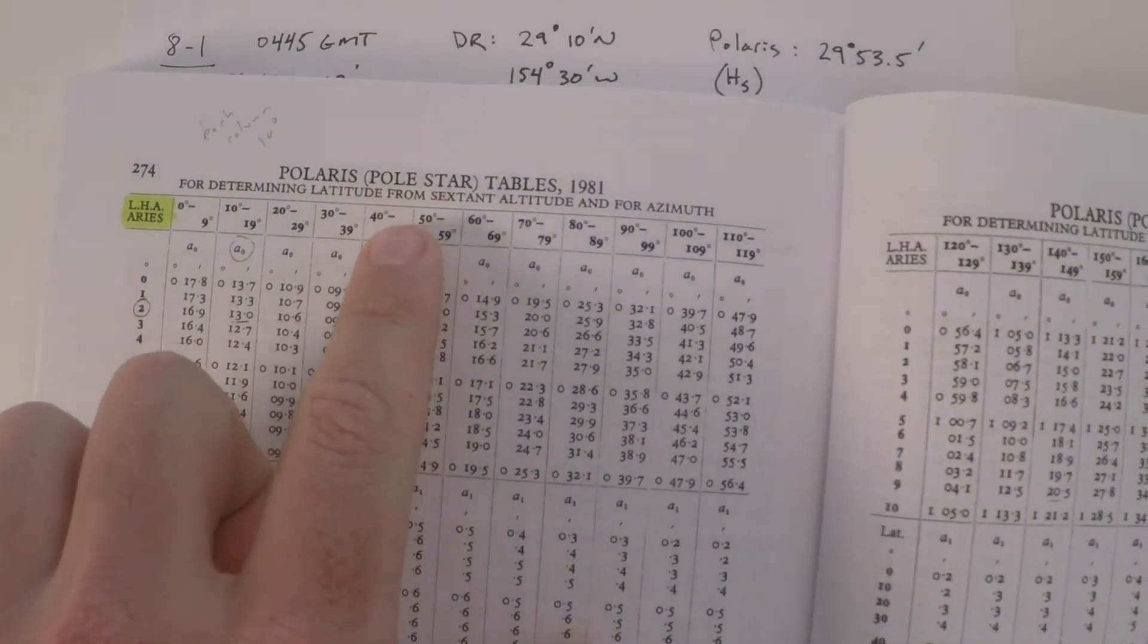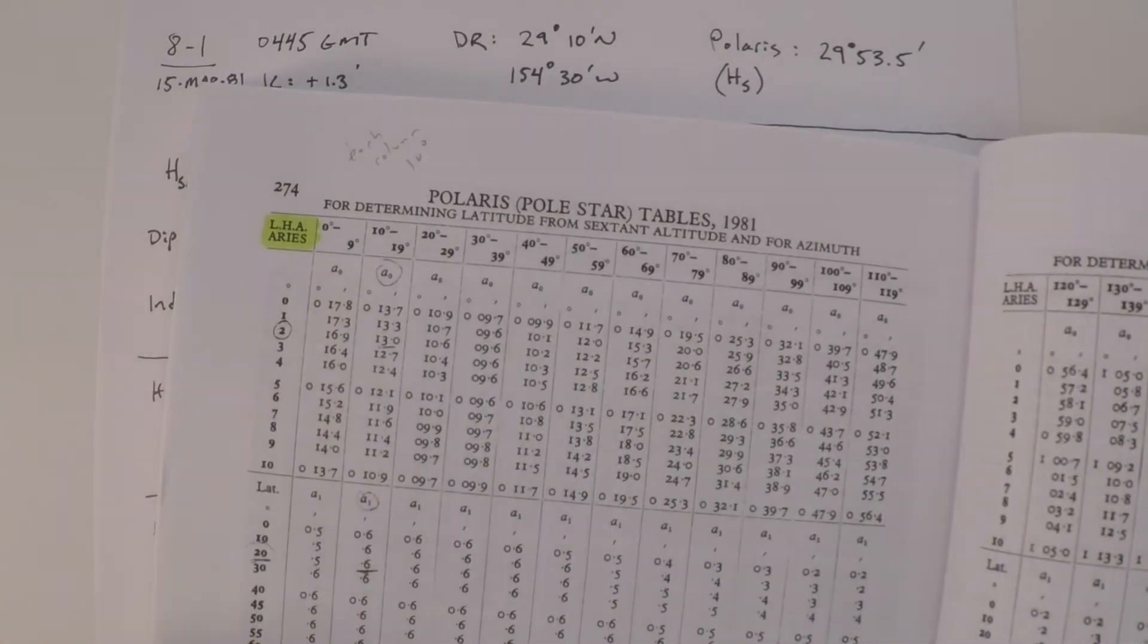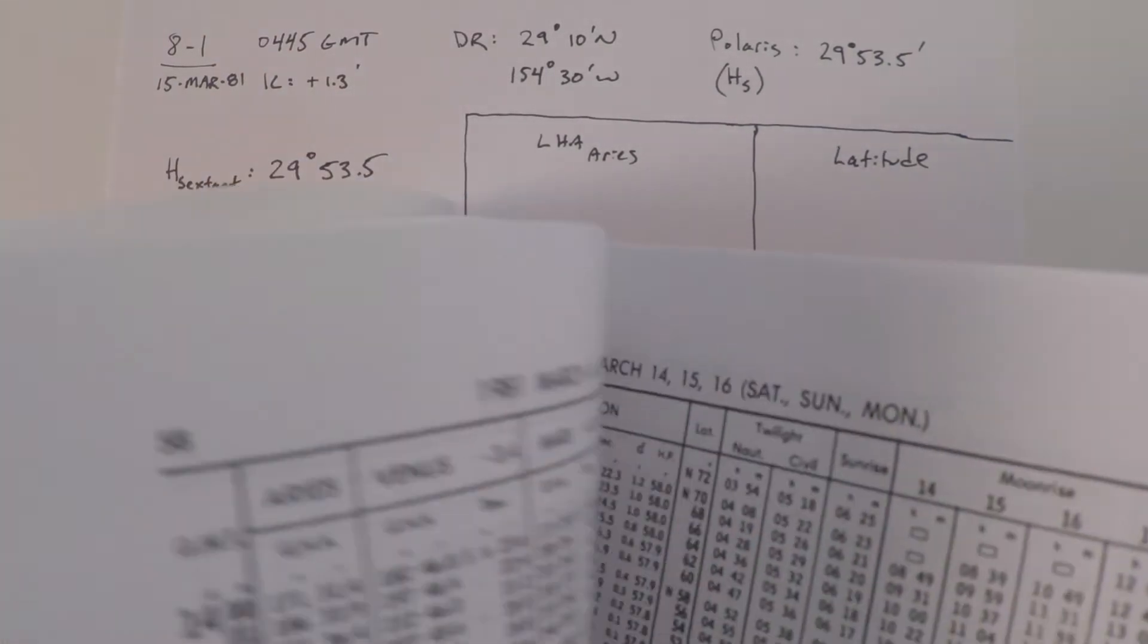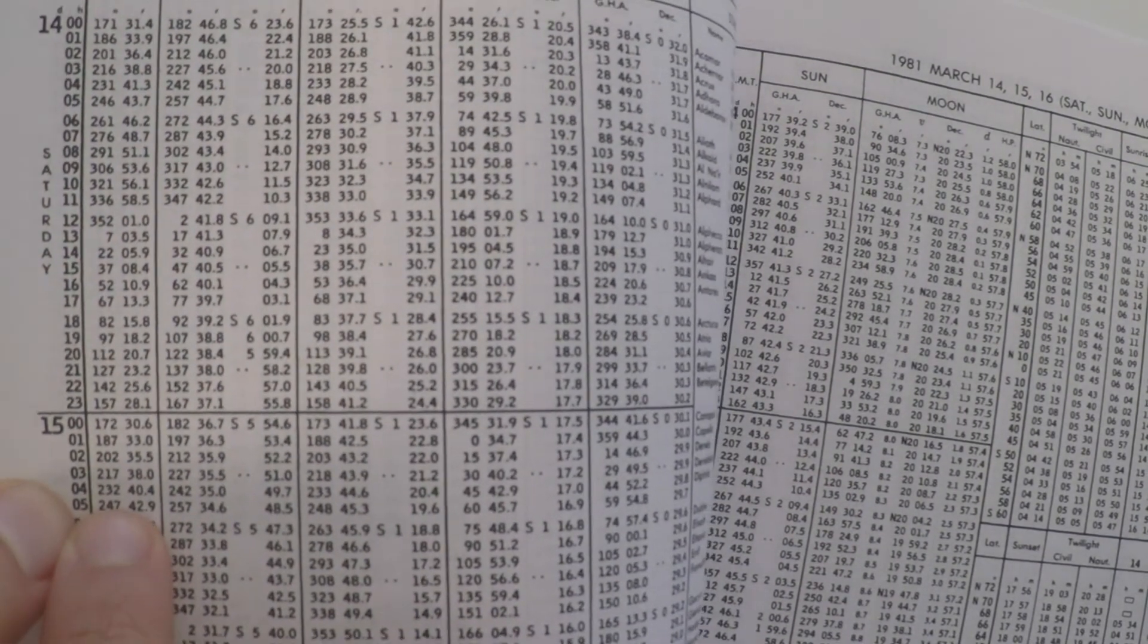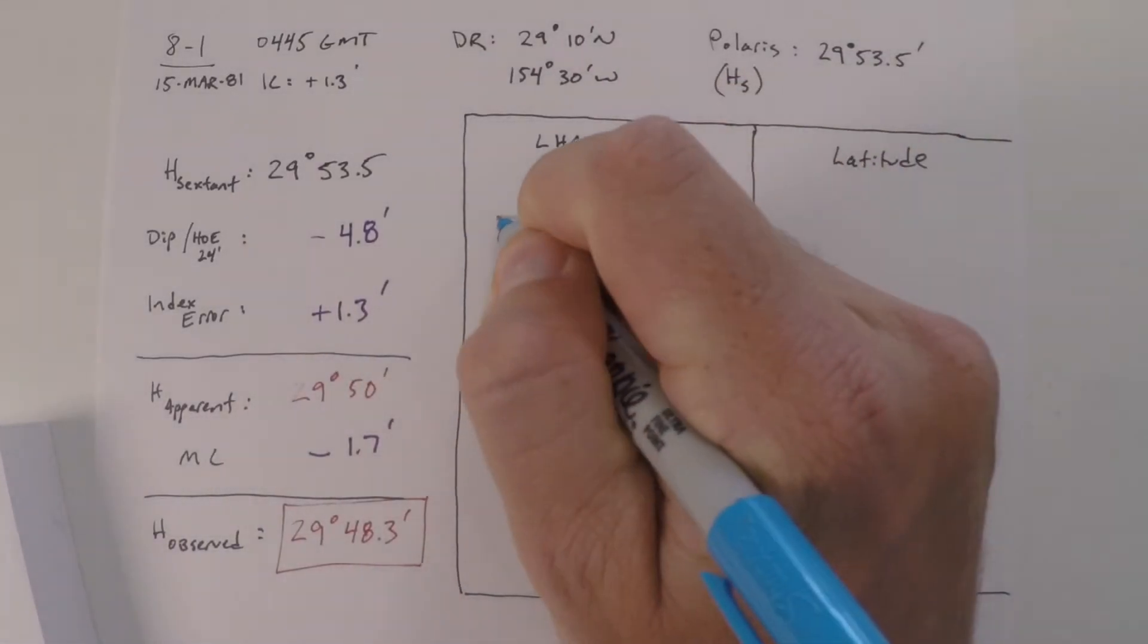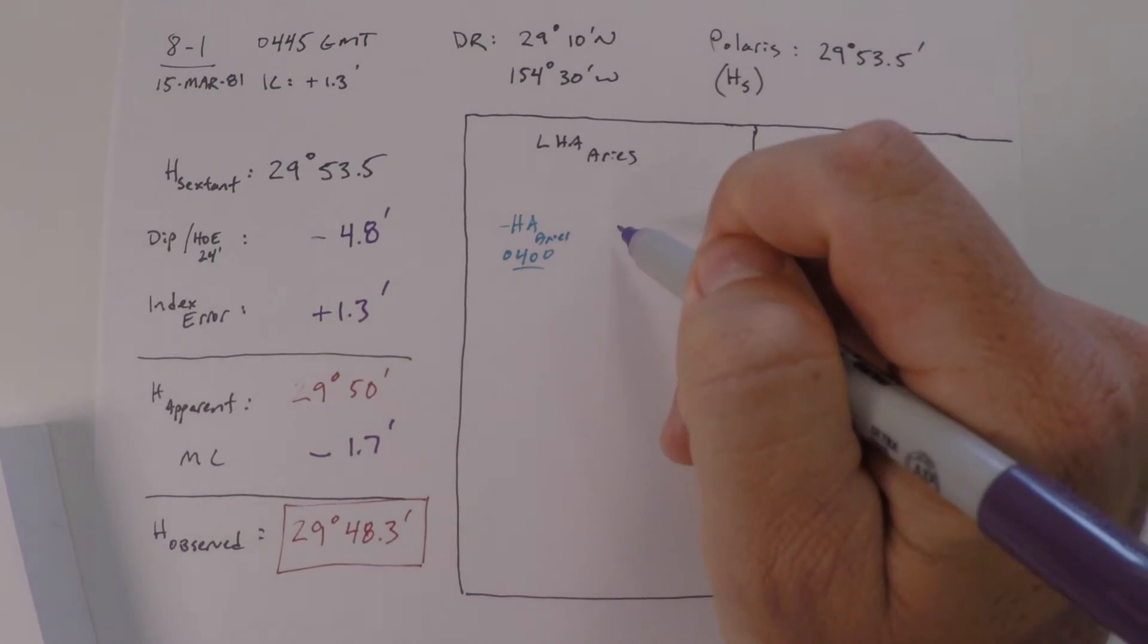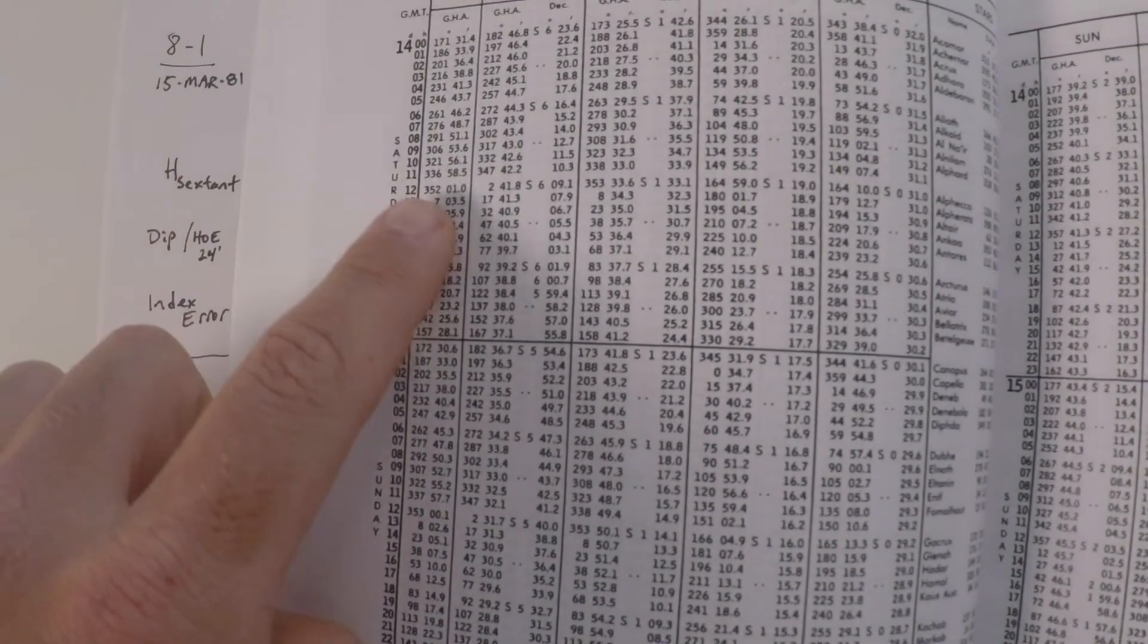The next thing we have to do is go into the Polaris tables. If you ever forget what you need to do, the table will tell you you need the LHA of Aries in order to successfully complete this calculation. So let's find the LHA of Aries. In order to do that, we need to first find the GHA of Aries for the day in question. If it's 15 March, we can go into the nautical almanac and find the GHA of Aries for 15 March for the whole hour of 0400. So 232 degrees 40.4 minutes. But then we need to account for the remaining 45 minutes. First thing we'll do is we'll write down the GHA of Aries for 0400, the whole value. That was 232 and 40.4 minutes right from the nautical almanac.